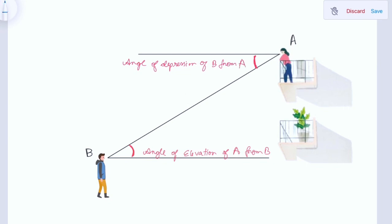So here we need to notice two things. First, the angle of elevation is always above the horizontal line, and the angle of depression is always below the horizontal line. Next, we need to focus on the word 'from.' From A means the angle is at point A. From B means the angle is at point B.